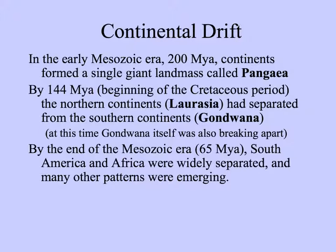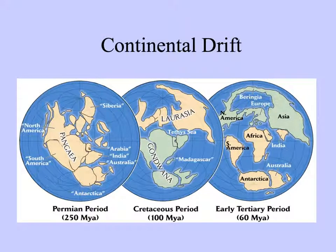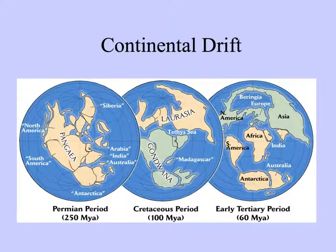While these continents are separated now, they used to be close to each other. Here's a diagram showing this: Pangaea, every continent touching and together; the Cretaceous period with Laurasia and Gondwana land; and then in the early Tertiary, the continents as we know them pretty well formed.